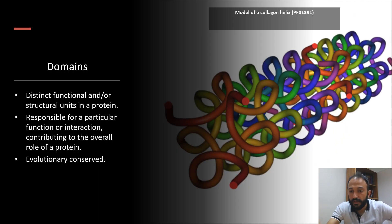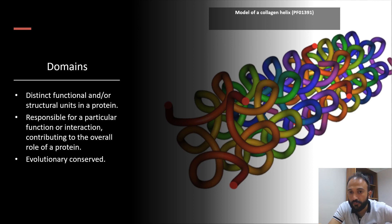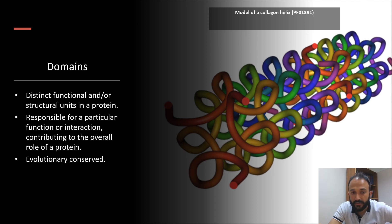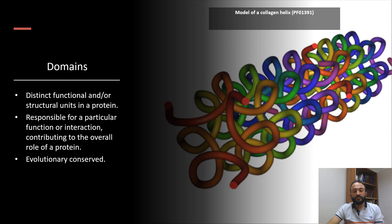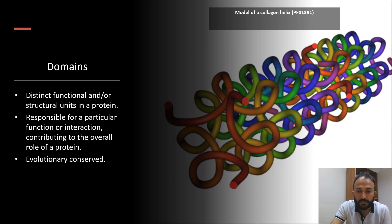A domain is actually the part of a protein — a distinct functional or structural unit. The example shown is the collagen helix domain, which is part of the collagen genes and is responsible for a particular function or interaction contributing to the overall role of the protein. The functional structure of a protein is defined by its domain. Genes of structural and functional importance are evolutionarily conserved, and if there is any mutation, that cell or organism is discarded by nature so that the mutation does not move further into the family.